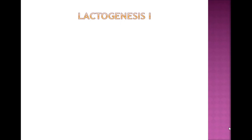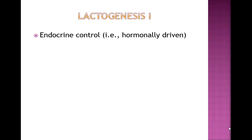Around 14 weeks of pregnancy — the second trimester — we enter lactogenesis 1. This is when the body begins to make colostrum. This phase is controlled by the endocrine system, which is a collection of glands that produce hormones regulating functions including growth, development, and reproduction.